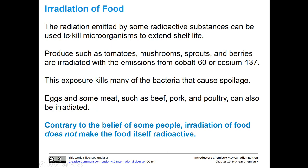One application of radioactivity is the irradiation of food. Exposing foods to radioactive substances kills microorganisms and extends shelf life. This is used with produce like tomatoes, mushrooms, sprouts, and berries, which are irradiated with emissions from cobalt-60 or cesium-137. Eggs and meats such as beef, pork, and poultry can also be irradiated. Importantly, irradiation of food does not make the food itself radioactive — it kills the microorganisms that absorb the radiation, while the food remains safe to eat.